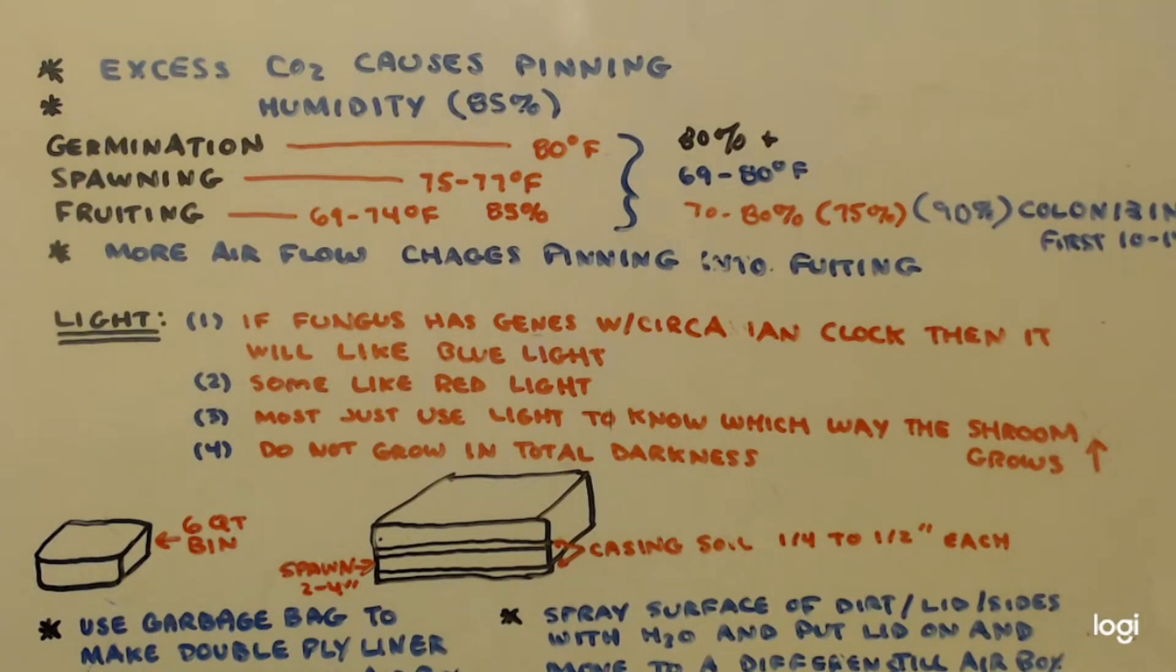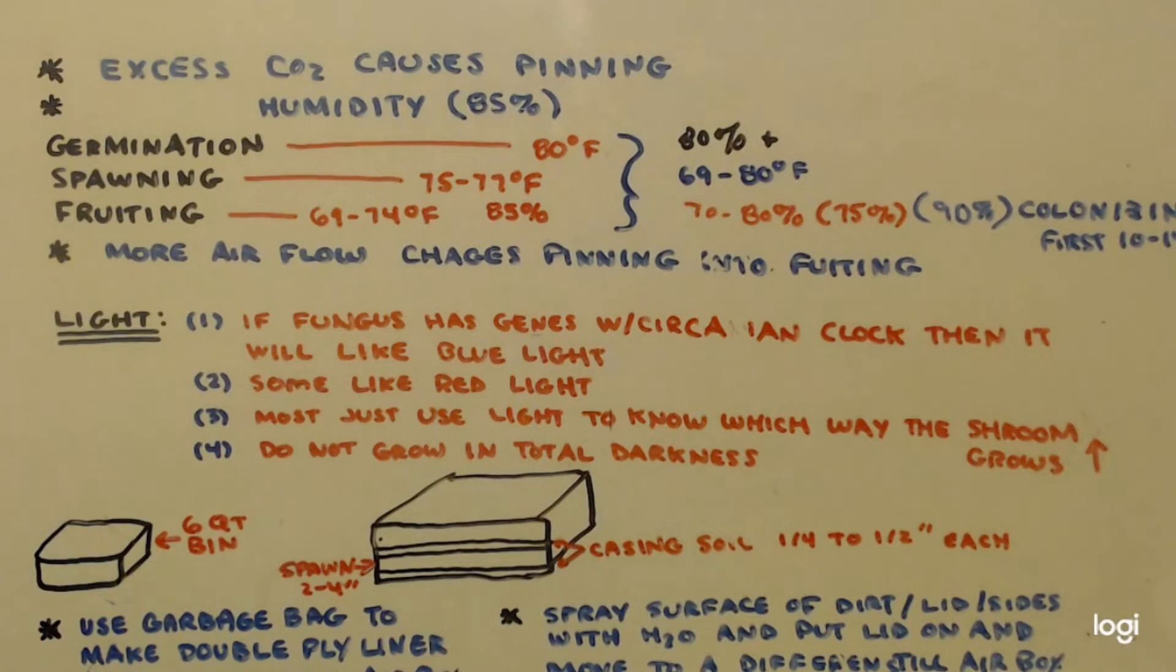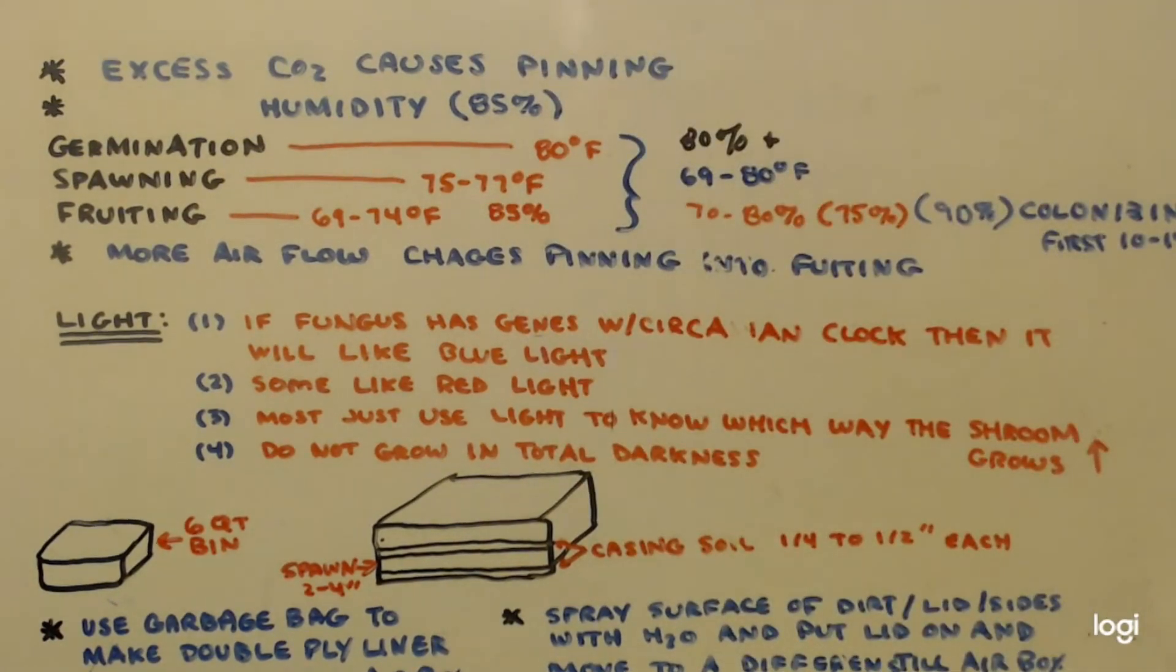But again, when we're spawning, they're in jars. We have our relative humidity sealed. We don't have to worry about relative humidity. You just have to worry about the temperature and it will work again anywhere between 70 and 80 degrees, but 75 to 77 would be the best. Then we move into fruiting. Now there's a couple parts of fruiting. The first part is colonizing.